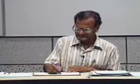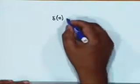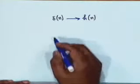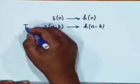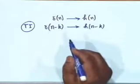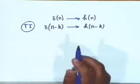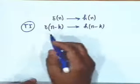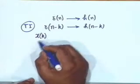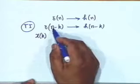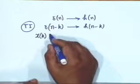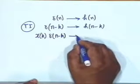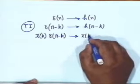To show this more compactly: delta(n) leads to h(n). If the system is time-invariant, then delta(n − k) leads to h(n − k) — this is the property of time invariance. Then by homogeneity, if we multiply by X(k) — the value of the signal at n = k — the output should also be multiplied by X(k).